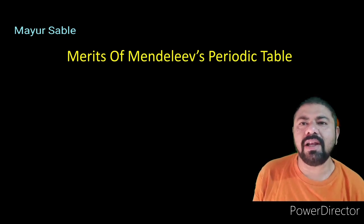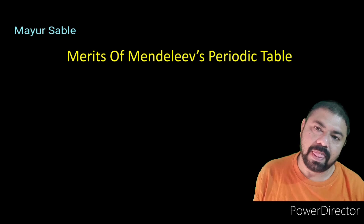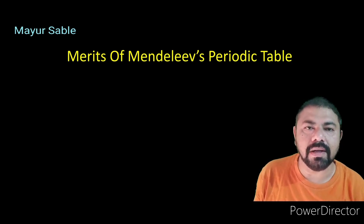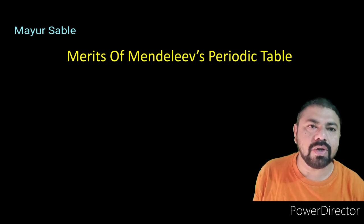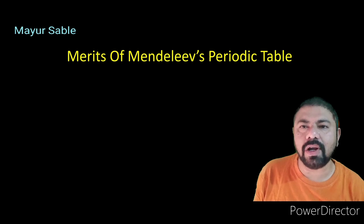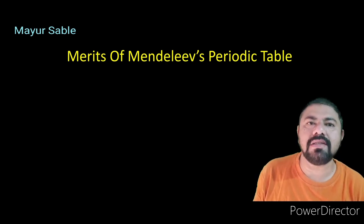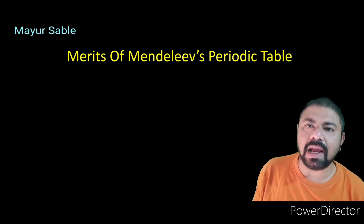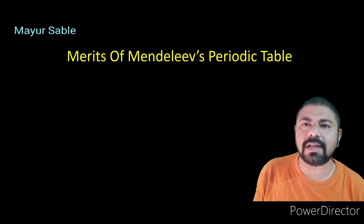A peculiarity of Mendeleev's periodic table is that it contains some vacant spaces. These vacant places were left for elements not yet discovered. Some question marks were also given due to uncertainty in the names of some elements. Science is progressive, with freedom to revise old inferences using advanced means and methods. This characteristic of science is clearly seen in Mendeleev's periodic table.